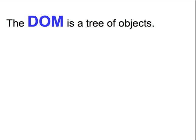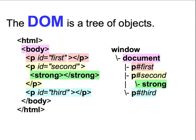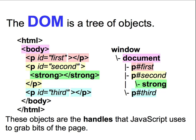For example, if we have this HTML on the left side, JavaScript that runs in the page will have access to a DOM that looks like this one on the right. A document object maps to the body of our HTML document, it has three children mapping to the three paragraph elements, and so on. These DOM nodes are JavaScript objects, and they have properties and methods that allow us to alter their representations on the page. Conceptually, they're the handles that JavaScript uses to grab and change bits of the page.